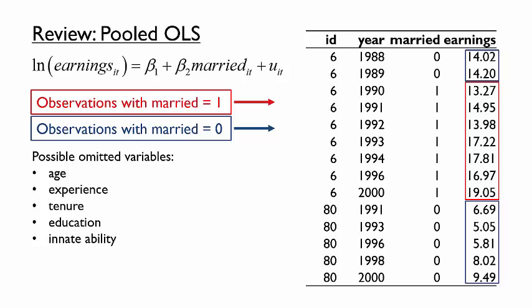You could likely make a long list of variables that might be omitted. Some of those omitted variables are readily available in the NLSY, while others are not — in fact, they are quite difficult to measure. Let's also make another distinction between the control variables that will become important soon. Some of those variables tend to change over time, while others do not. Education tends to be completed early in adulthood, so education might be constant after individuals reach a certain age. You might argue that innate ability is also fixed.